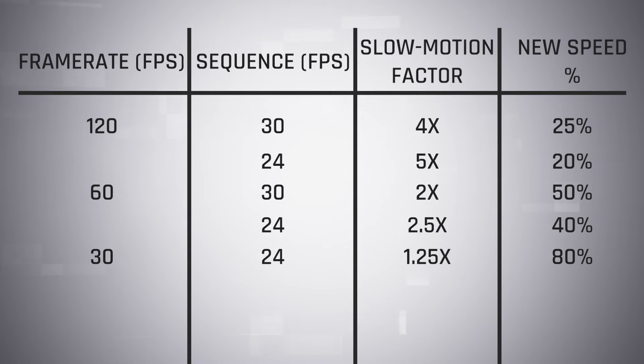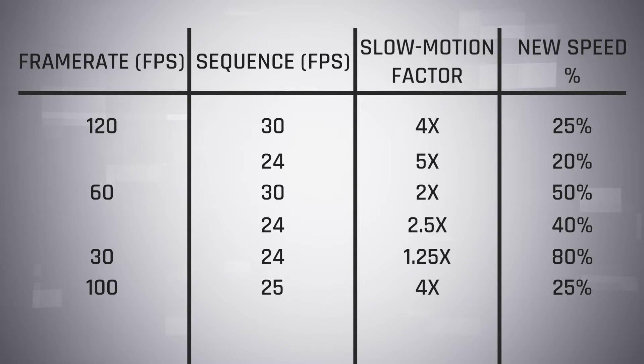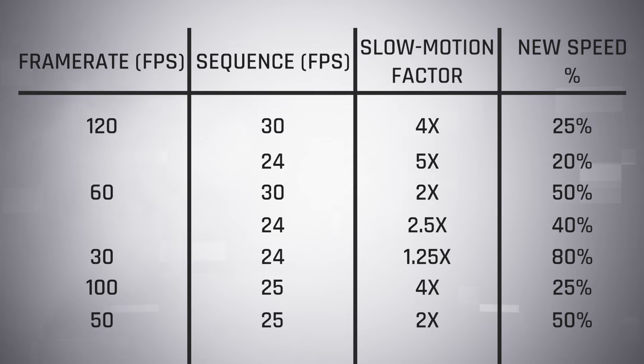If you have footage shot at 100fps, you can slow this down to 25% in a 25fps timeline. If you have 50fps footage, this can be slowed down to 50% in a 25fps timeline. If you haven't screen-grabbed any of this, check out the description below — I'll have all these numbers written down as a simple guide that you can copy and paste, or save this video to come back to later.